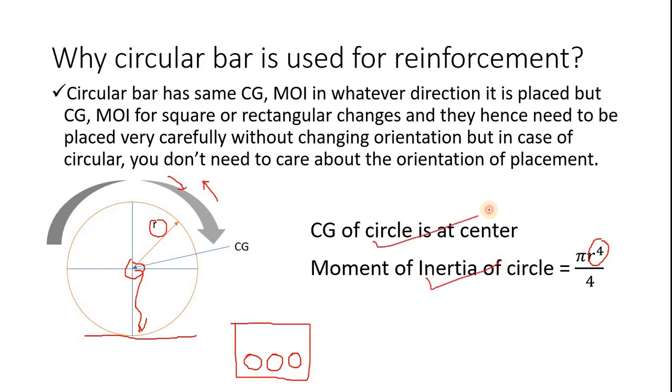And moment of inertia depends upon r, so the moment of inertia also doesn't change, CG also doesn't change, no matter in which orientation you place it. But when you use square or rectangular you need to be very careful while placing it. If it gets slightly rotated then moment of inertia will change and CG will change as well.